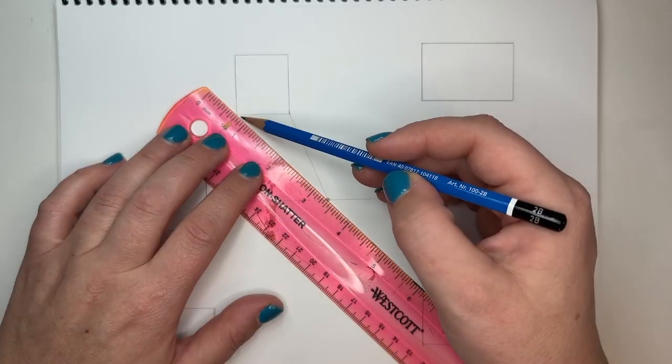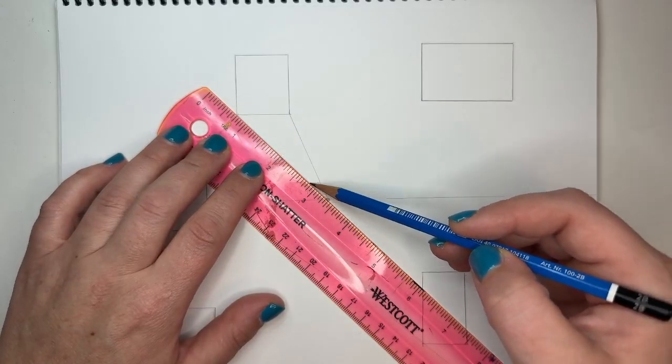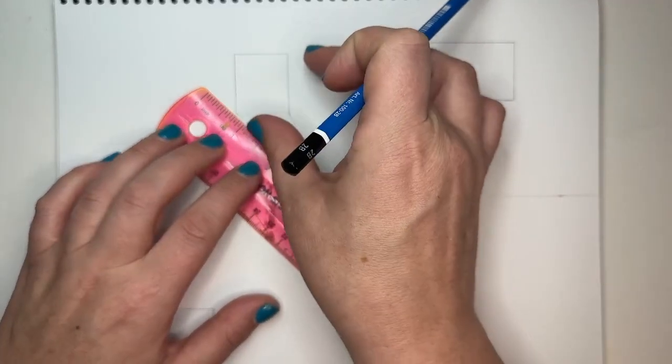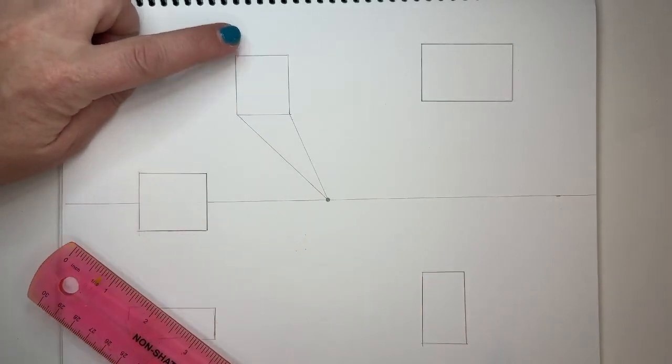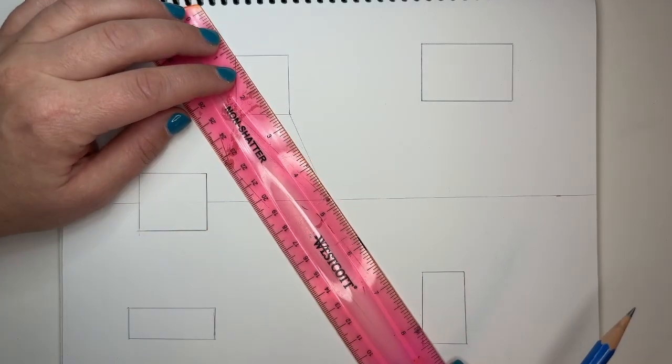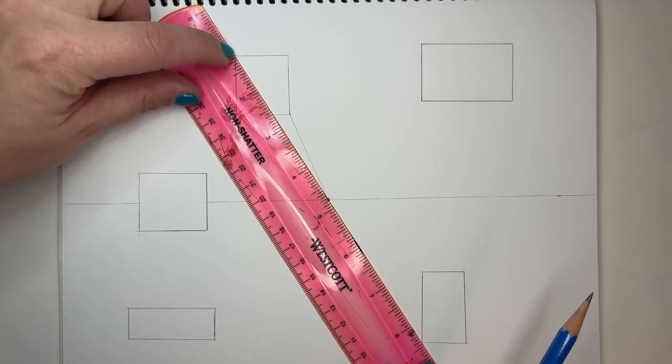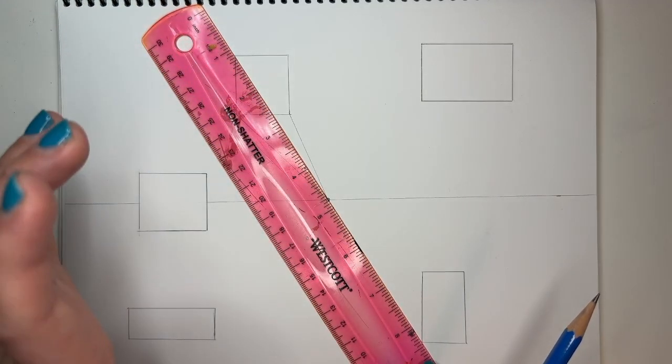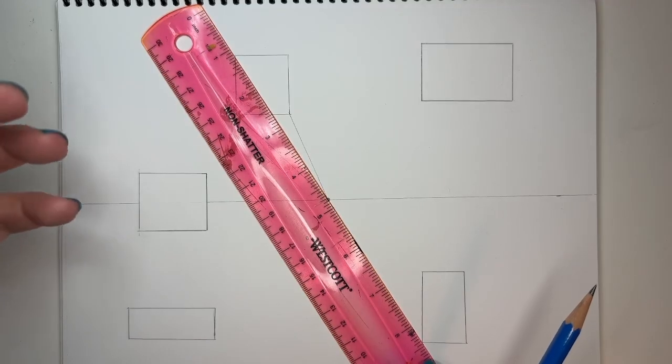And then you'll go ahead and repeat that on each side that will show. And so what I mean by that, like this corner, for example, if I line my ruler up, you'll notice it goes directly through that shape. So that indicates that I wouldn't put a line there.